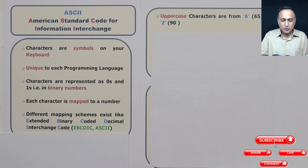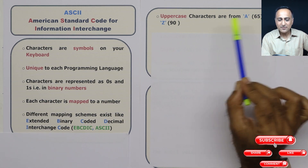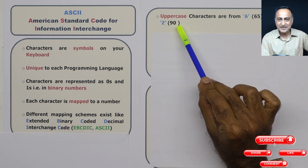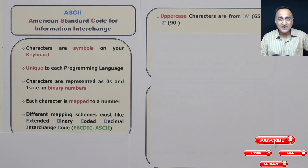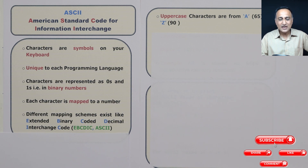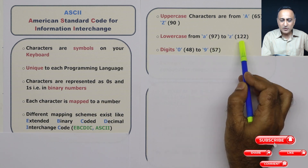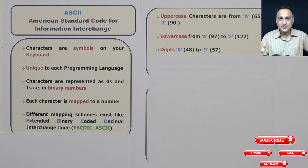The uppercase characters starting from A are internally represented as decimal 65 and capital Z is represented as decimal 90. But A is not stored as 65 directly — decimal 65 is converted to ones and zeros, and whatever is the value of 65 in binary, that is the representation used to store capital A. Capital B is 66, capital C is 67, capital D is 68, and so on. Lowercase letters are represented from 97 to 122 in decimal; 97 is converted to binary for lowercase a, and 122 in decimal is converted to binary for lowercase z.